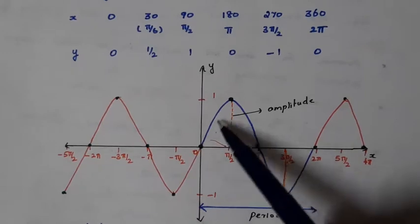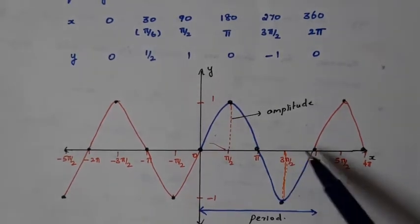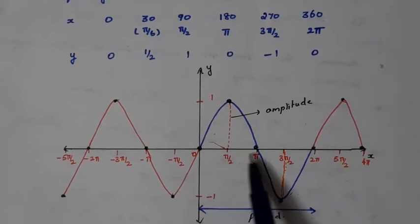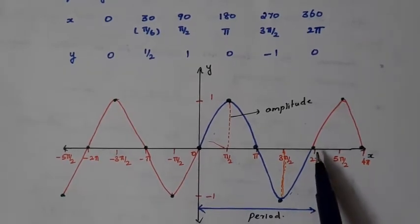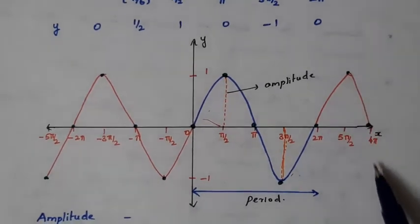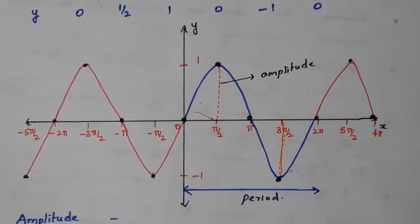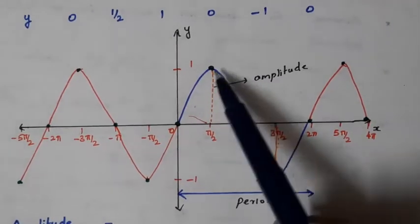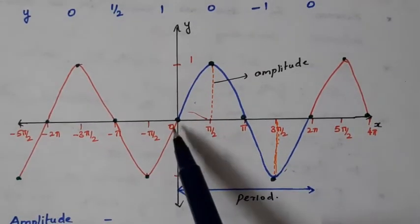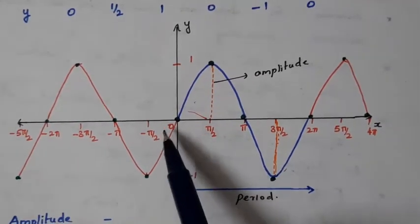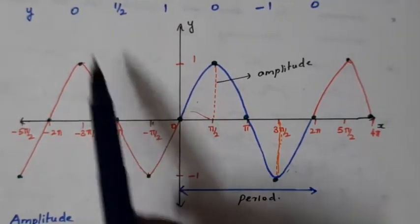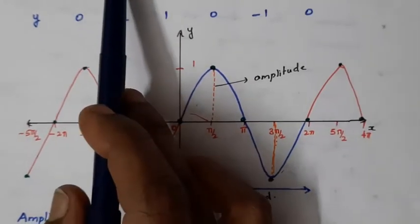If you join the points, you get a curve. This is a part of the sine graph for one complete revolution, 0 to 2π. If we extend this again, you get a graph where the same curve gets repeated throughout. And similarly for the negative side as well.